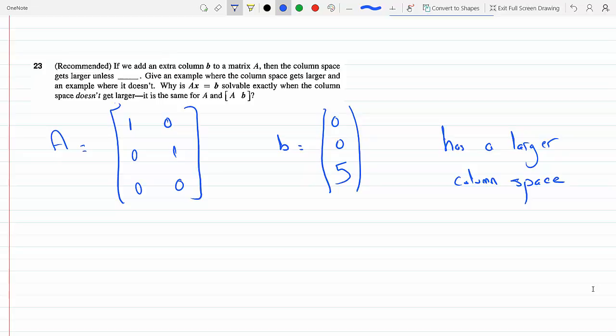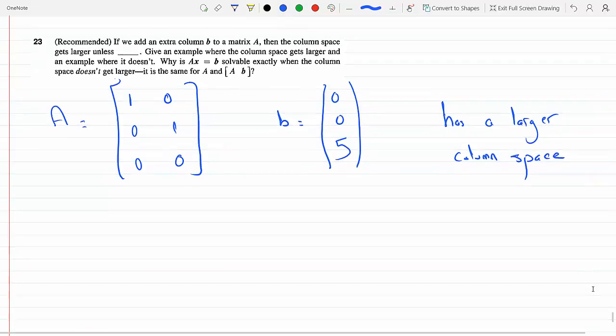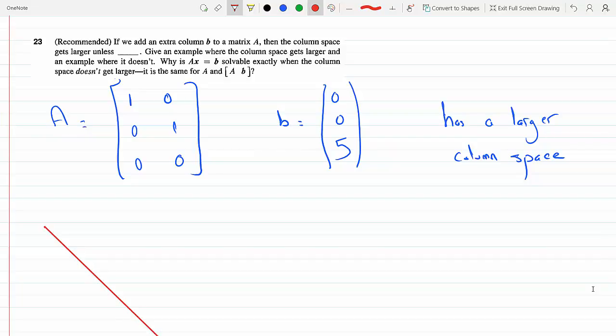But consider this: what if A is the same one I wrote, and now what if I choose B to be [4 0 0]?